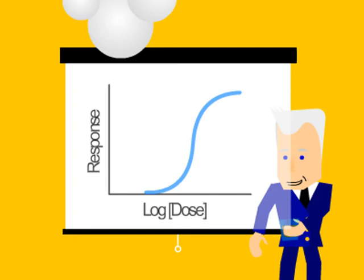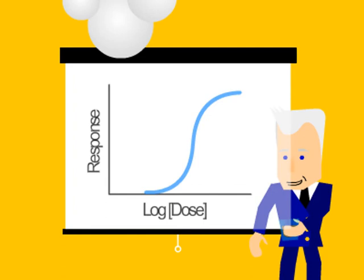There's one point on the curve I would like to point out, the EC50. This point lies halfway between the baseline and the maximal effect we can achieve.